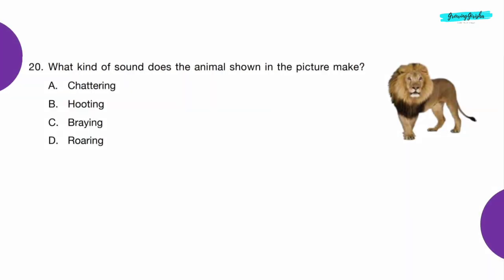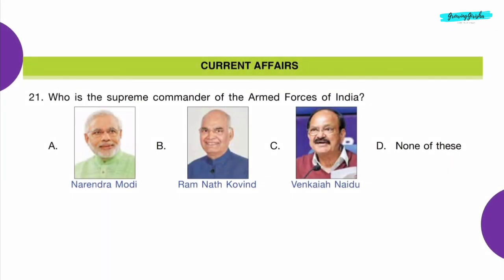Question 20: What kind of sound does the animal shown in the picture make? Option D — Roaring.